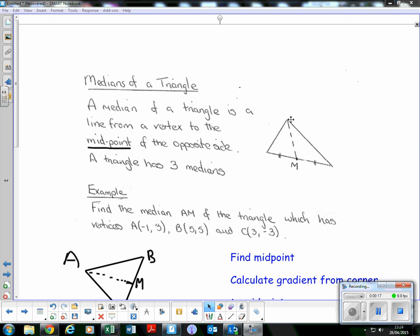So here we go from this corner or vertex to the middle of the opposite side. If we wanted the median from this corner, we'd go to there. And if we want the median from this corner, we'll go from here to the midpoint of the opposite side.